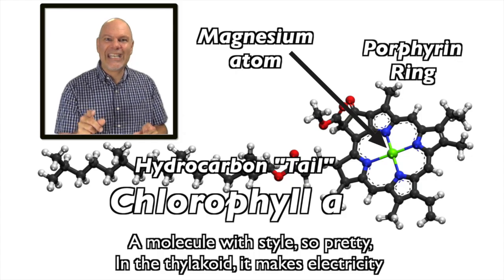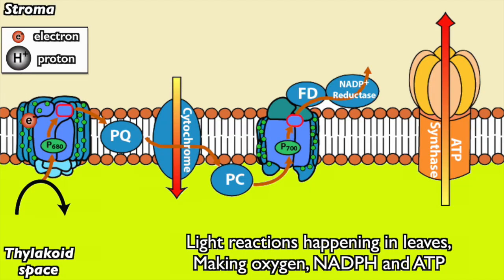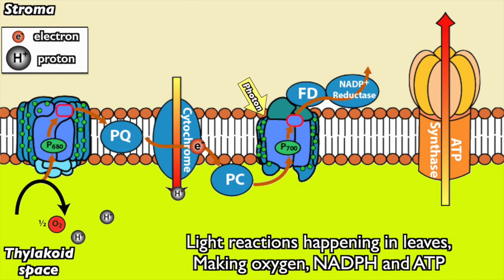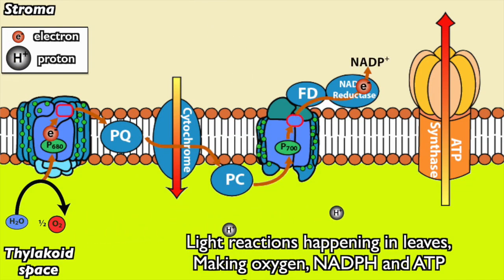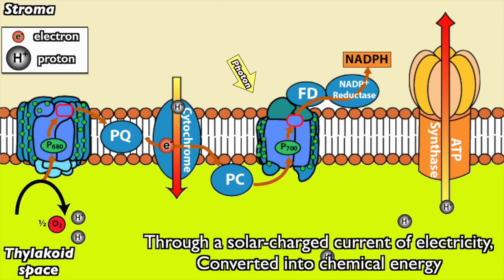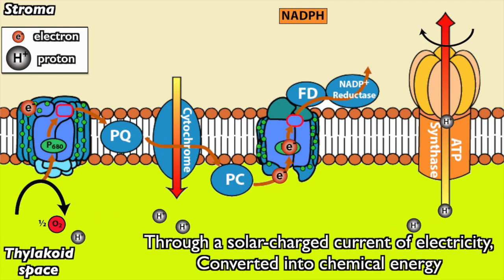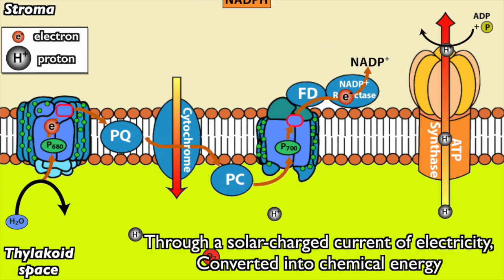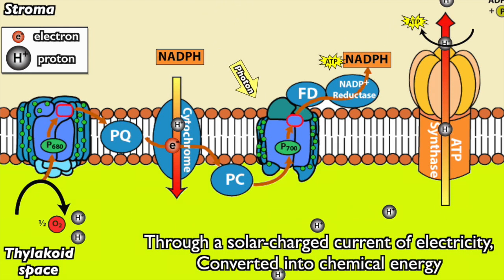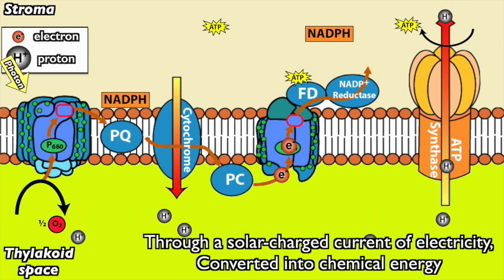Light reactions happening in leaves, making oxygen, NADPH, and ATP. Through a solar charge current, the electricity converted into chemical energy.